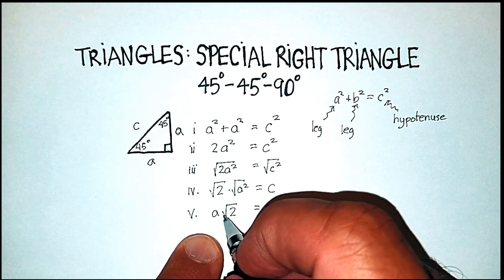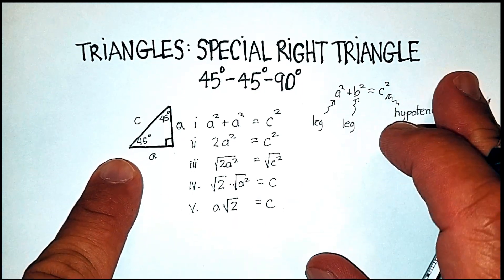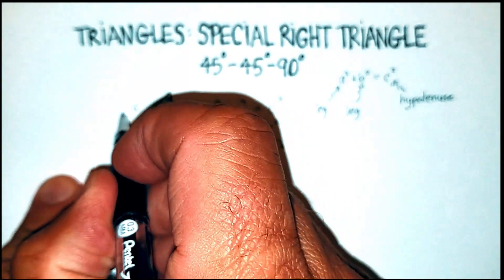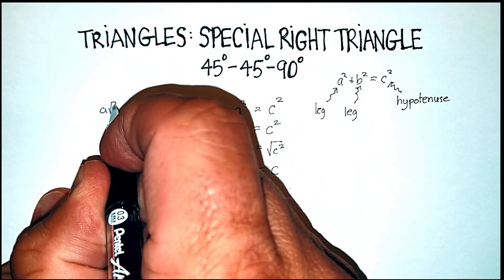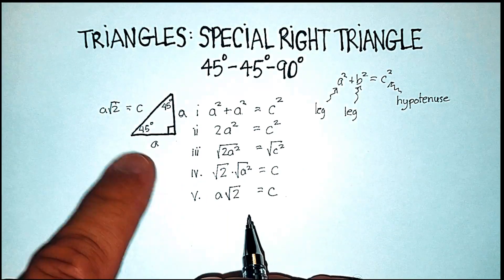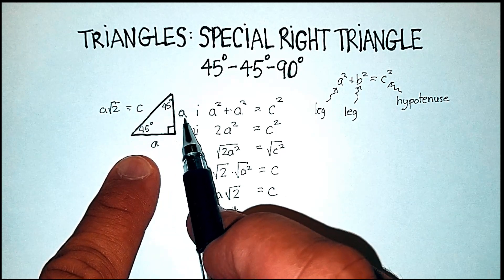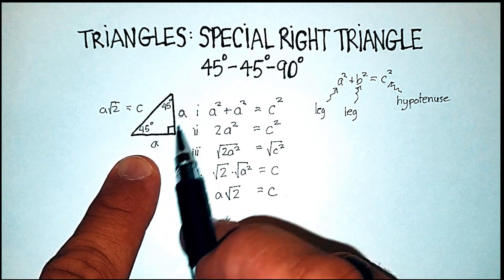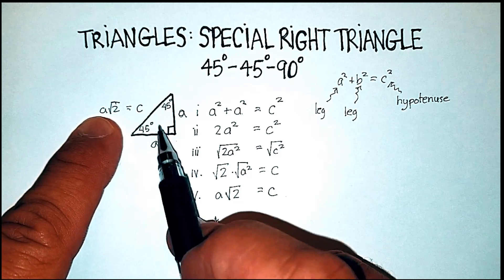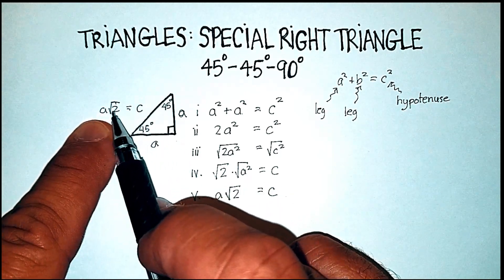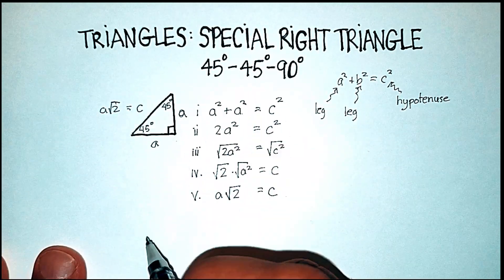Now look what that does for our 45-45-90 degree triangle. That basically says that whatever these two equal sides are, we can put that value in front of radical two, and the hypotenuse will be just that side times radical two.